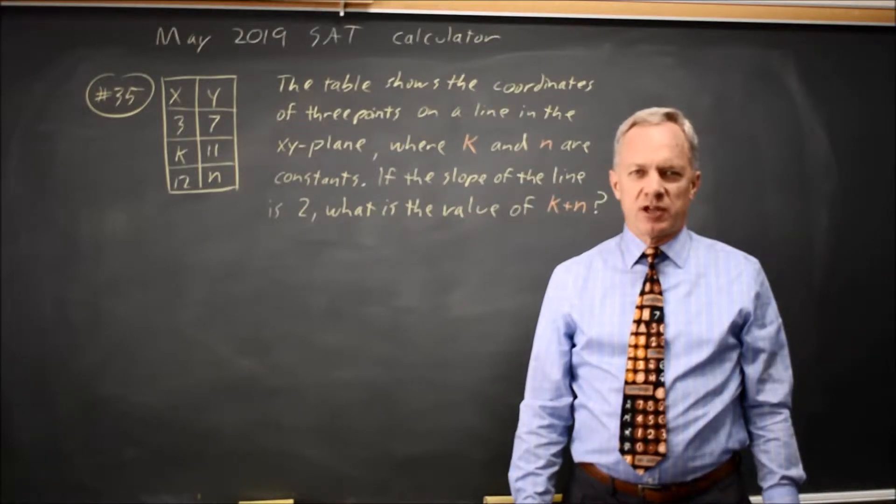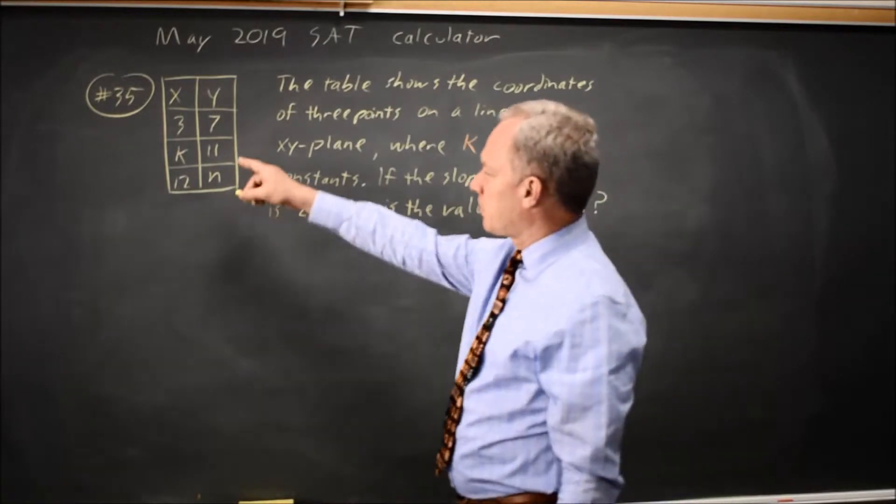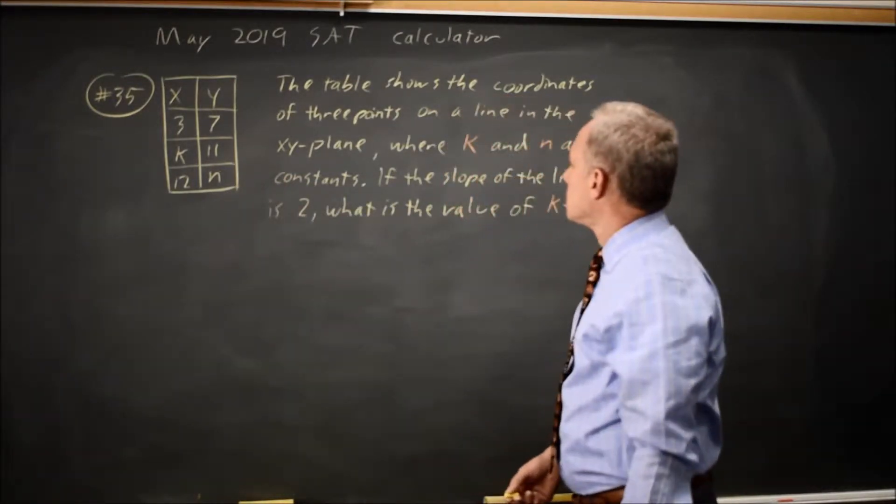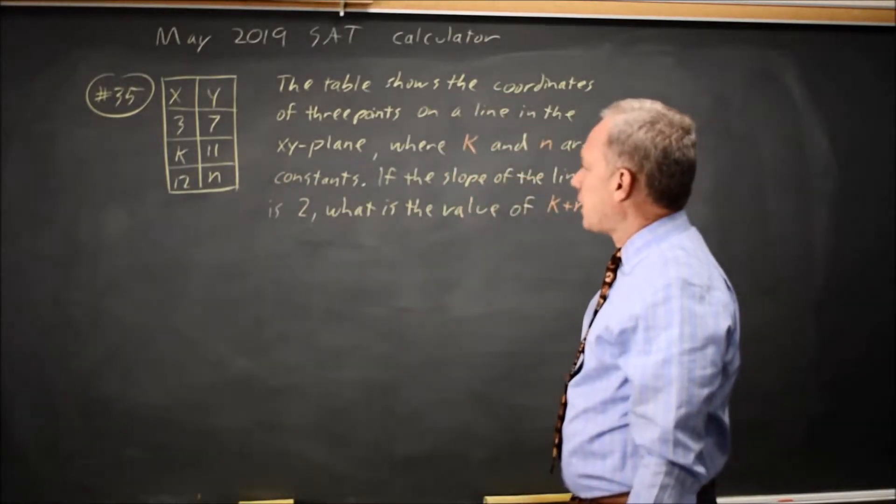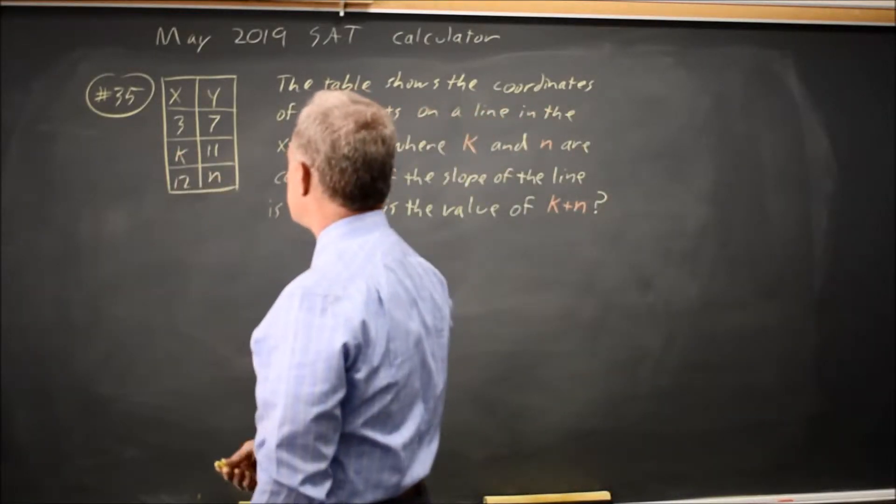This is calculator question 35 from the May 2019 International Exam. College Board gives you a table of values for a linear equation, and they ask for the sum of k and n, the two missing numbers.